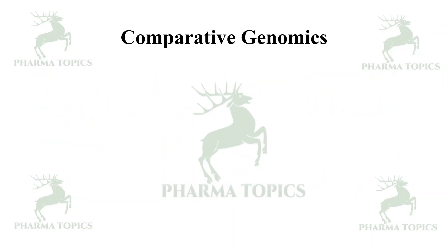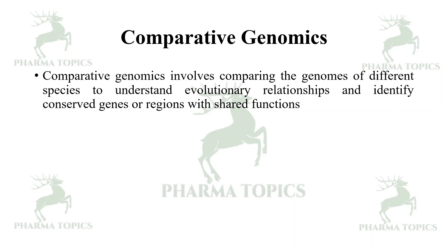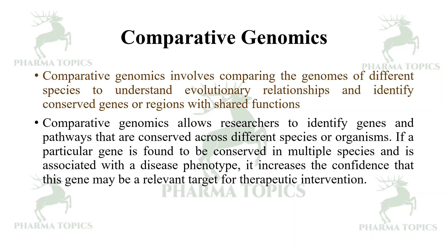Comparative genomics involves comparing the genomes of different species to understand evolutionary relationships and identify conserved regions or genes with shared functions. It allows researchers to identify genes or pathways that are conserved across different species or organisms. If a particular gene is found to be conserved in multiple species and is associated with a disease phenotype, it increases the confidence that this gene may be a relevant target for therapeutic intervention.